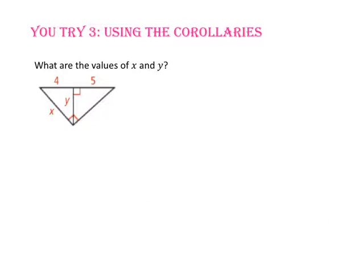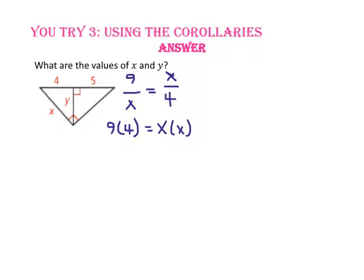Pause the video and do you try number 3. Since X is a leg, we know that X will be the geometric mean of the entire hypotenuse 4 plus 5, or 9, and the segment of the hypotenuse adjacent to the leg, which is 4. Using cross products: 9 times 4 equals X squared, so 36 equals X squared. Taking the square root of both sides, X equals 6.